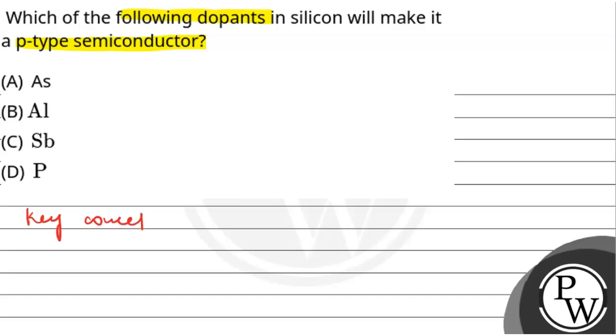So our key concept is the p-type semiconductor. Basically, what happens if there is silicon or germanium - if we create p-type, then what we need to do is we need to do the trivalent impurity.